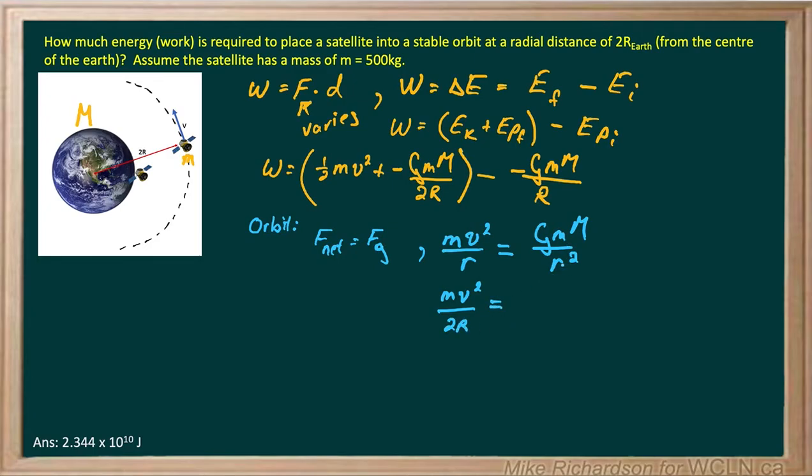And on this side, this r represents the distance between the two masses. Remember, this is our force of gravity equation. And R represents the separation between the two masses. Well, when I'm at my final location, the separation from the center of the satellite to the center of the Earth is still 2R. So the right-hand side will be G M M over 2R all squared.